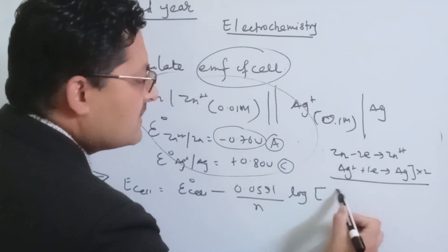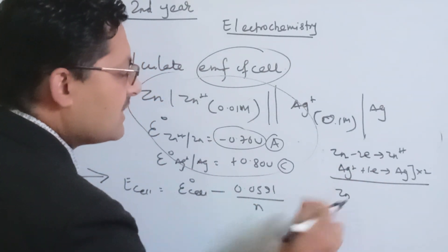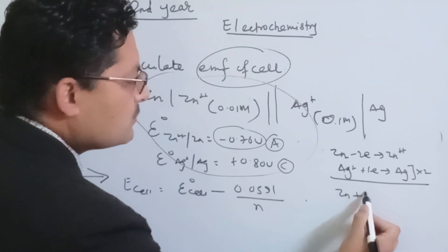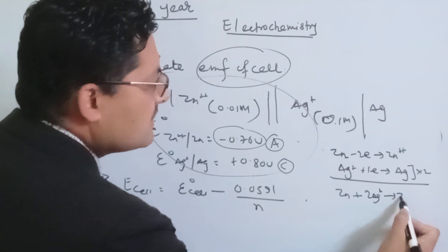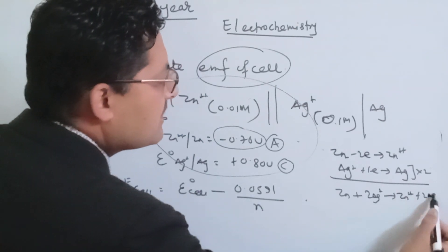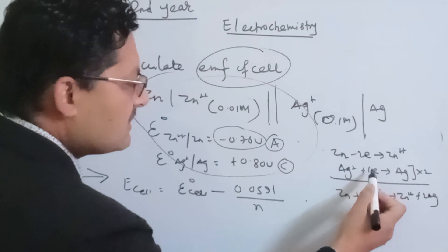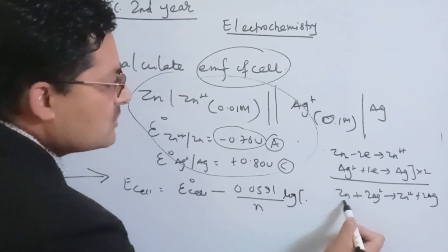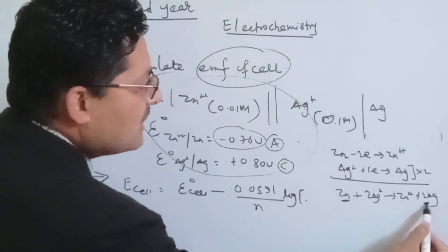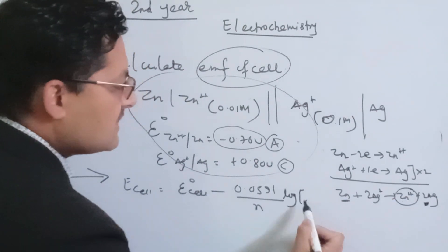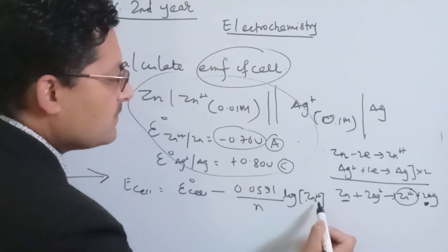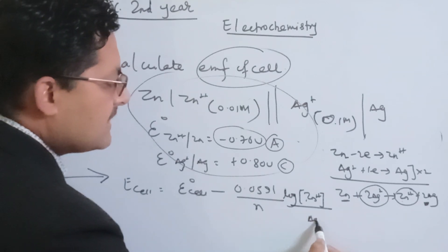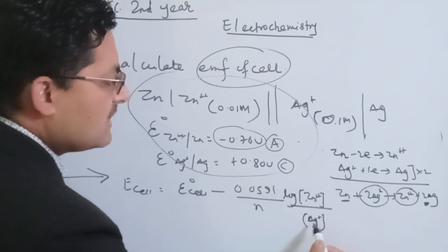The anode reaction involves zinc — multiply by 2. The overall cell reaction is: Zn + 2Ag⁺ → Zn²⁺ + 2Ag. This is the cell reaction involving zinc and silver, with n = 2 electrons transferred.